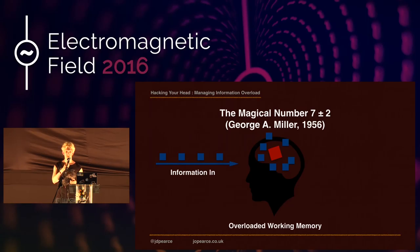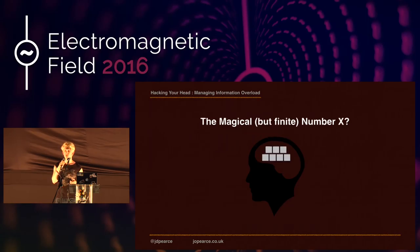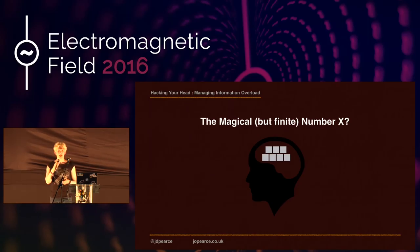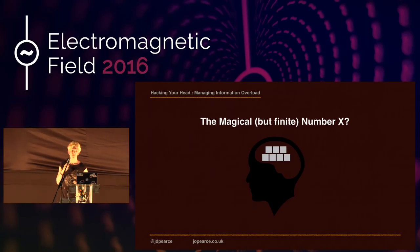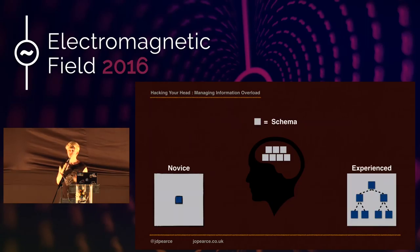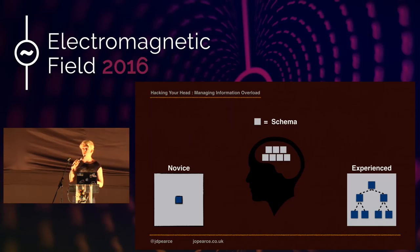Some web designers have used Miller's Law as justification for only putting 7 things or fewer on a page — but this is a misinterpretation. It wasn't the number of things that was the important result, but the fact that there was always a limit. We now equate those things to schemas: someone with more connected schemas can handle more complex information in working memory at once.